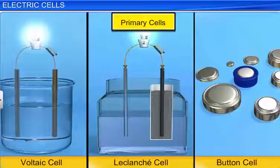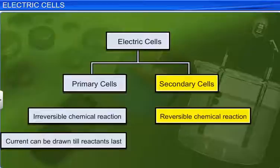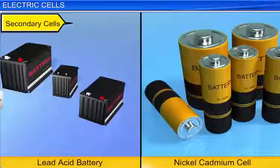In a secondary cell, the chemical reaction is reversible. Thus, a secondary cell can be recharged and reused. Lead Acid Storage Battery, Nickel-Iron Cell, and Nickel-Cadmium Cell are some examples of secondary cells.